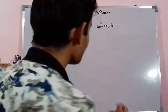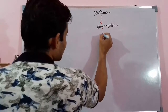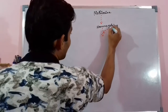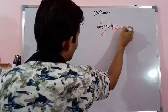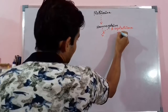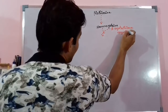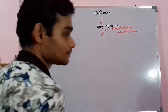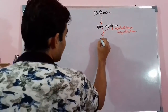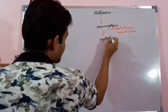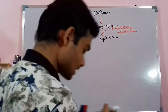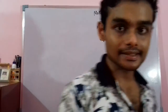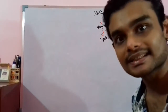Homocysteine, in the presence of an important enzyme called beta-cystathionine synthetase, gives rise to cystathionine. This cystathionine is an important intermediate amino acid that has been formed from homocysteine catabolism.